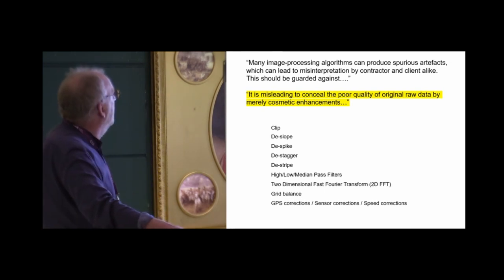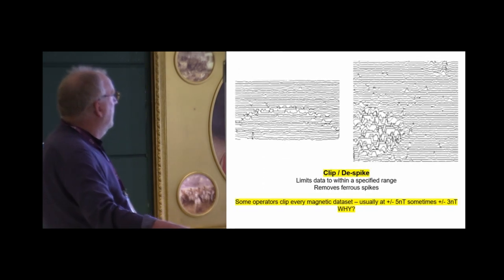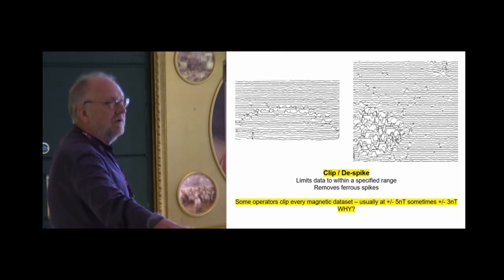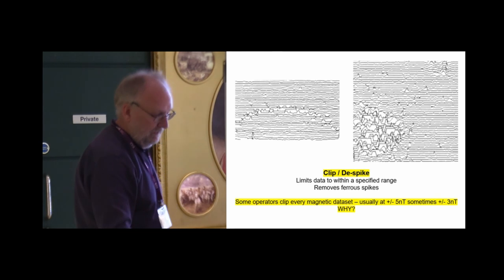This is an extract from some of the guidelines. It is misleading to conceal the poor quality of original raw data by merely cosmetic enhancements. There is a list of different processing techniques that can be used for magnetic data. Magnetic data should not be over-processed. It just should not. Why are we using this whole range of techniques? Great, some of these are actually producing XY plots, but they're regularly clipping the data at plus or minus 3 or plus or minus 5. And what does this show? It means you cannot begin to interpret what the shape of the anomalies are. And this is done regularly in most of their reports. Of course you need the XYs. I'm the strongest proponent for them. But they've got to be proper XYs.